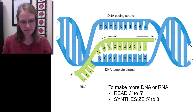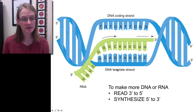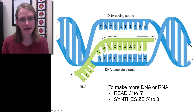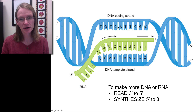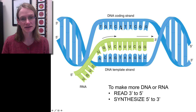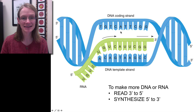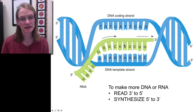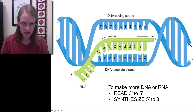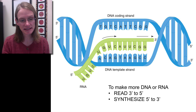This strand is called the template because it provides the template from which to actually make more DNA or RNA. The other strand is called the coding strand. The coding strand matches exactly but with complementary bases — if we have an A here, we have a T there. You should also notice that the coding strand has almost the exact same sequence of nucleotides that we see in RNA. The only difference is that every time we see a T in DNA, we see a U in RNA.